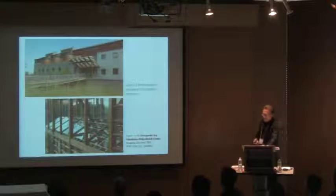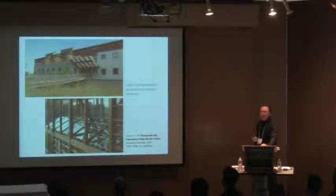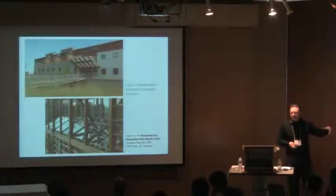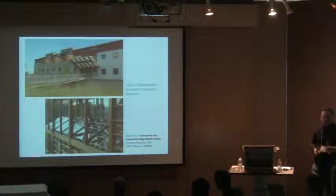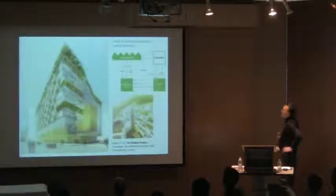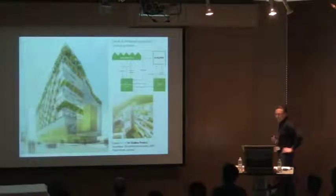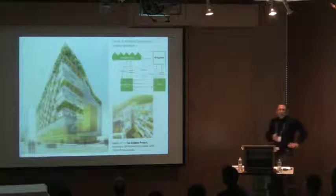Here's another example: the Chesapeake Bay Foundation's Merrill Center, the first LEED Platinum building. It's a building that takes water as its theme — the Chesapeake Bay Foundation is about cleaning up the watershed. It begins to look at how the building fits into the context of the water cycle: collecting and storing water, restoring and creating wetlands that have been destroyed, with permeable paving and so forth.